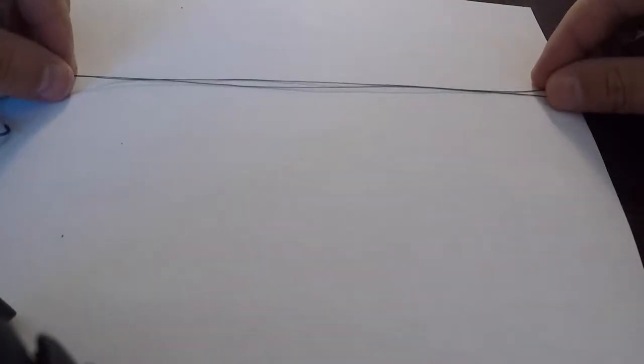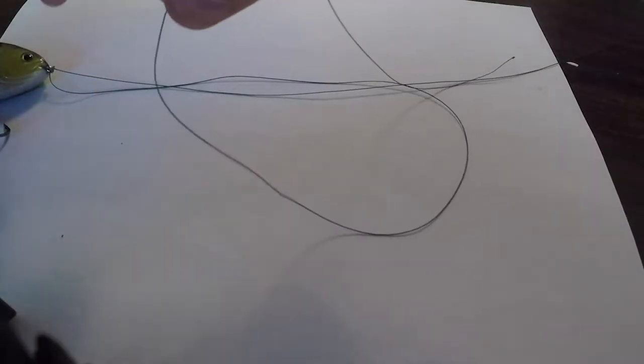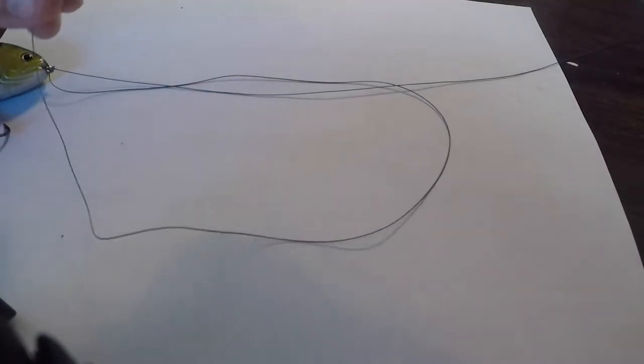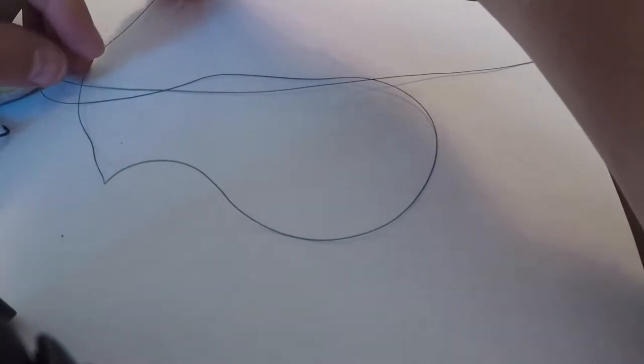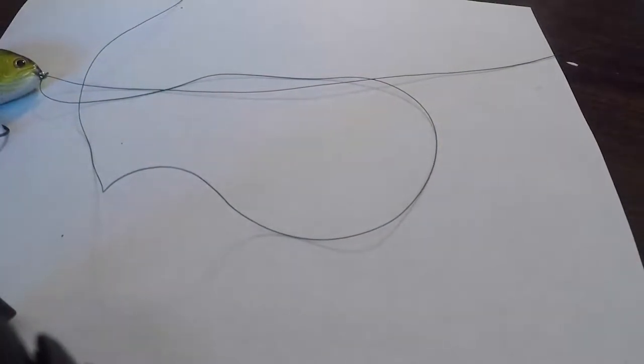All right, now run it along your main line and then you're going to loop the tag end. You're going to loop it and you're going to pinch it. You're going to lay it down right there near the eye of the lure.